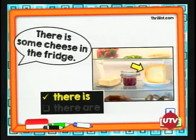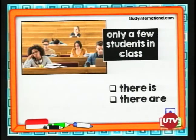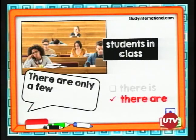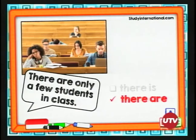Ahora vamos con este — a ver si es singular o plural. Dice: "only a few students in class". ¿Singular o plural? "A few students" — students es plural, por lo tanto tenemos que utilizar there are. Entonces, escogemos there are y decimos: "There are only a few students in class" — hay solamente unos cuantos estudiantes en clase. ¡Súper fácil!